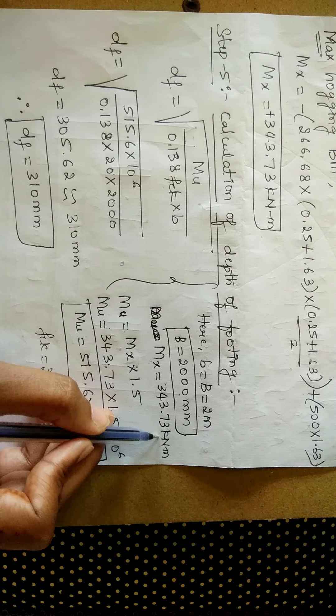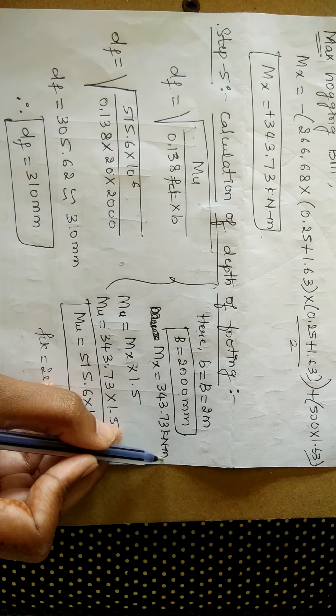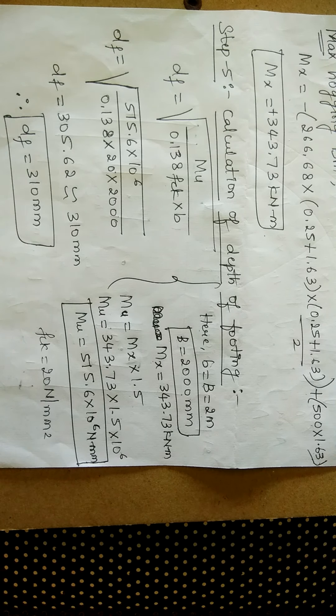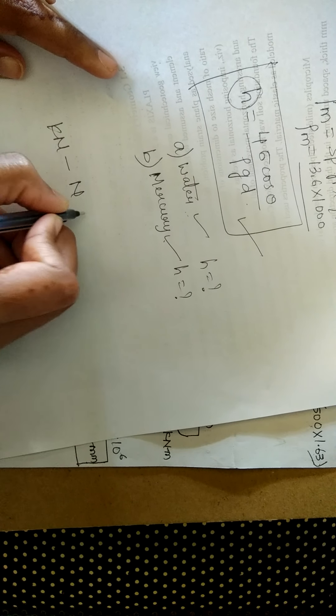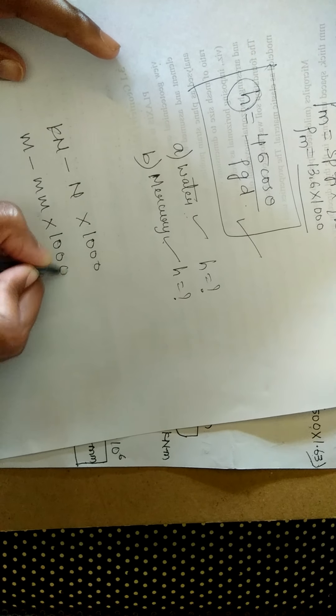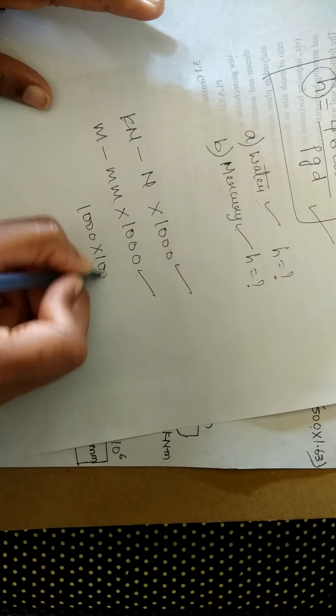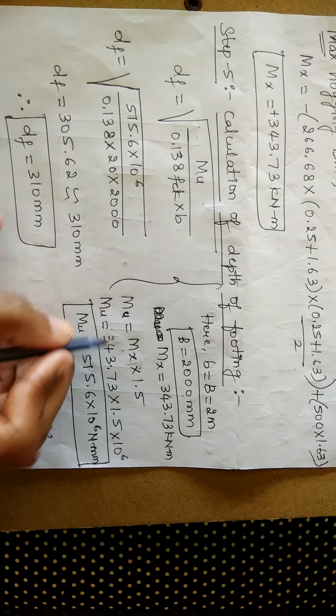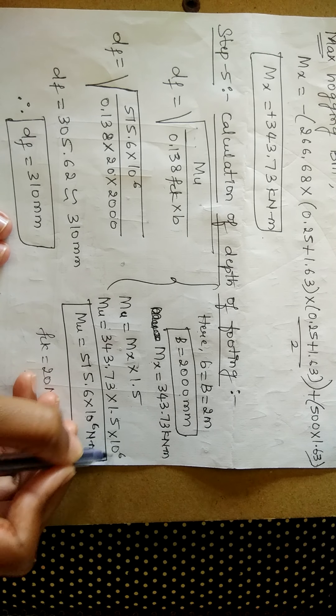As mx is in terms of kilonewton meter, we need to convert that in terms of newton mm. So for converting kilonewton in terms of newton, we multiply the value with 1000. Again, to convert meters in terms of mm, we again have to multiply the value with 1000. So this 1000 into 1000 gives you 10 to the power 6. So for that reason, I am writing this as 343.73 into 1.5 into 10 to the power 6.